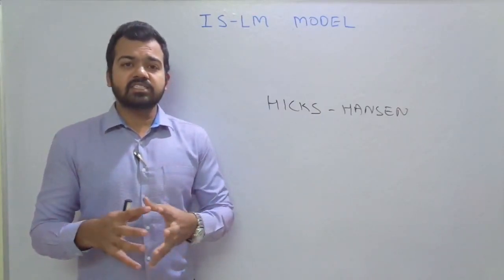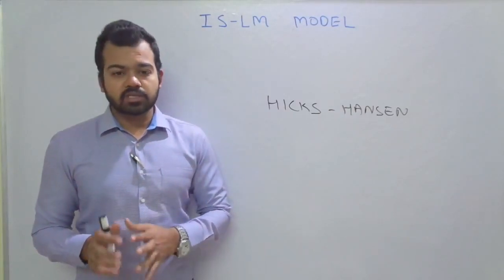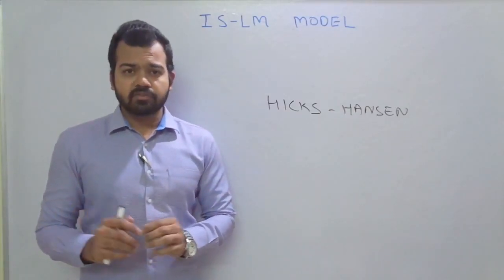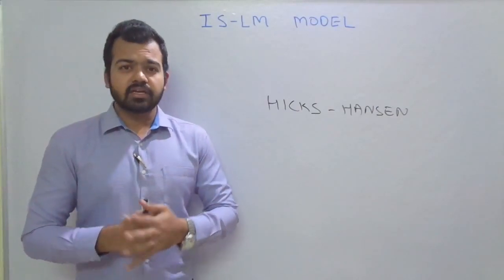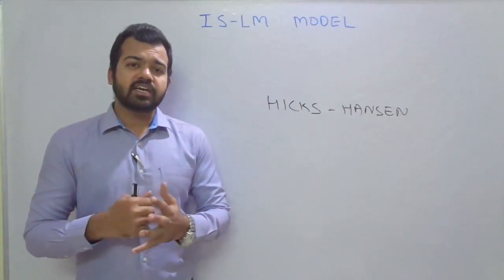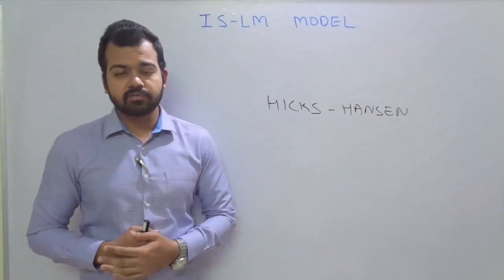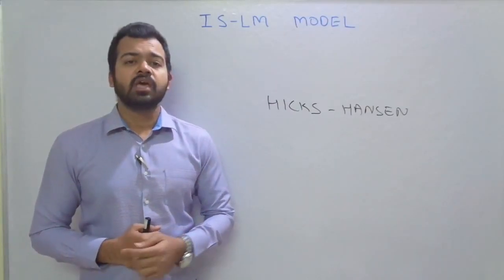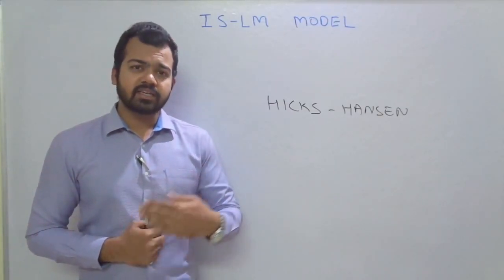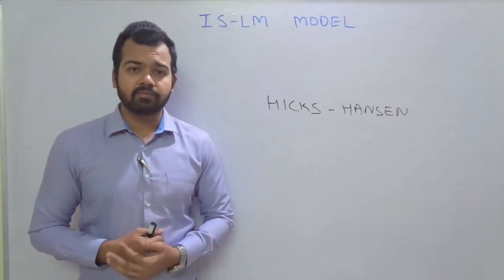Keynes said that the money market is different from the goods market, but in this modern IS-LM model we integrate these two concepts. In this current video we will discuss only the IS curve, and in subsequent videos we'll discuss the LM curve and finally the equilibrium in the goods and money market.